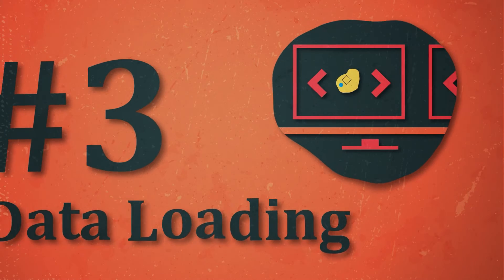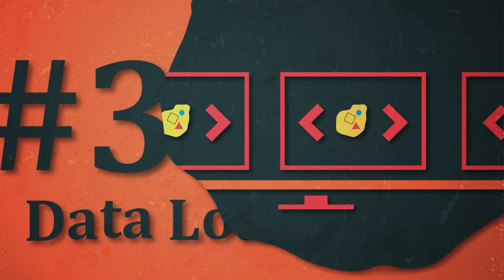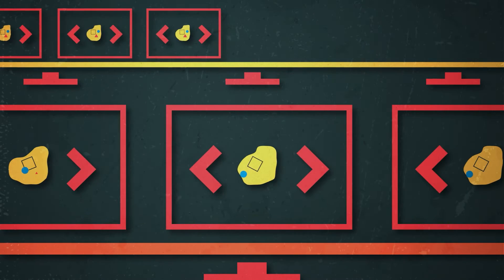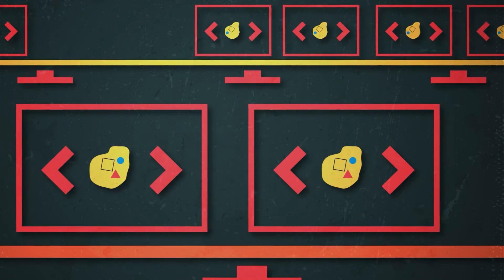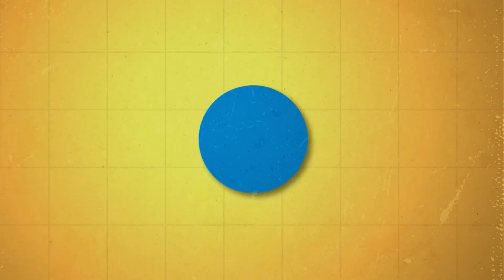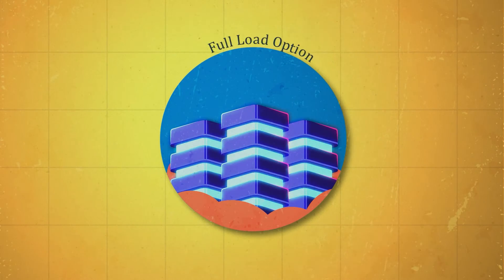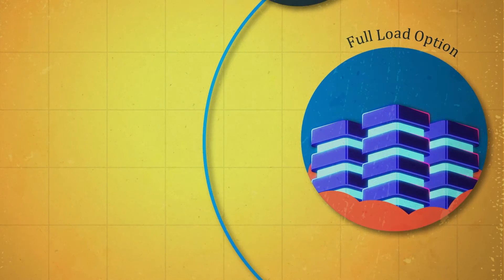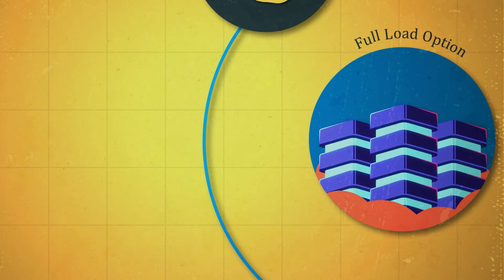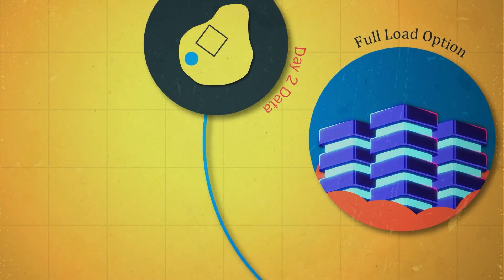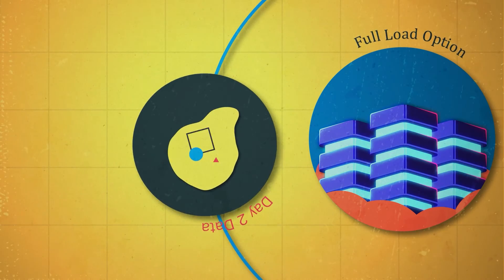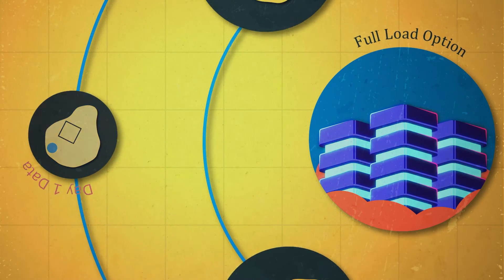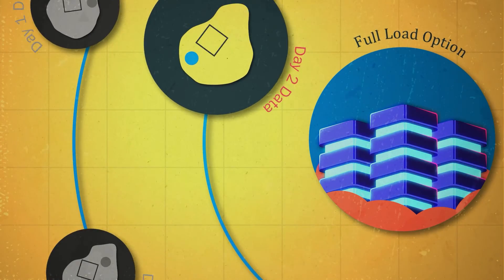Data loading. This is where the newly transformed data is collectively loaded into a new location. There are two main methods for this. First, we have the full load option, where data is loaded in bulk. With this method, all of the datasets coming out of the transformation phase are loaded into the centralized location from scratch. This means that any existing data that was loaded before is erased or deleted.